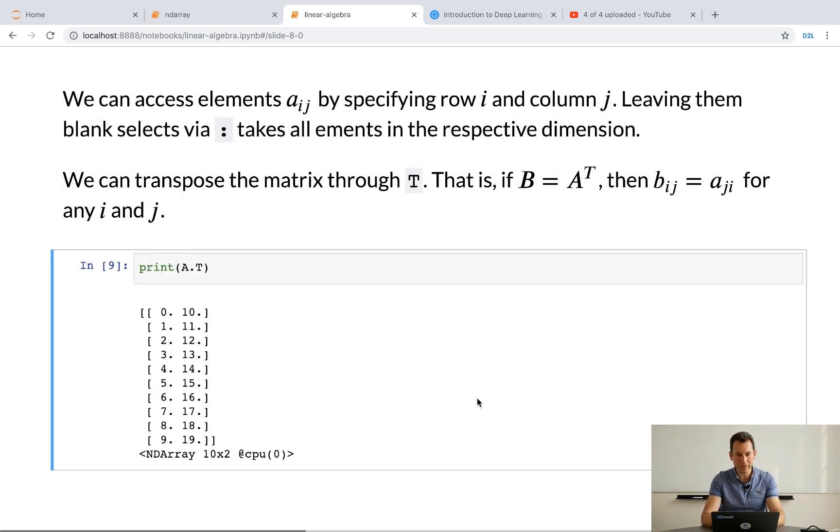Now, you can look at the transpose of this. And that's just a dot t. If I had, let's say, a 10-dimensional just single vector, then it would be just the row column vector appropriately. But otherwise, it's just that.